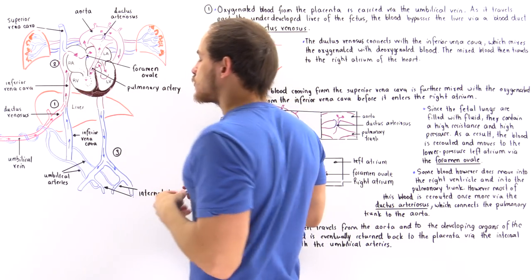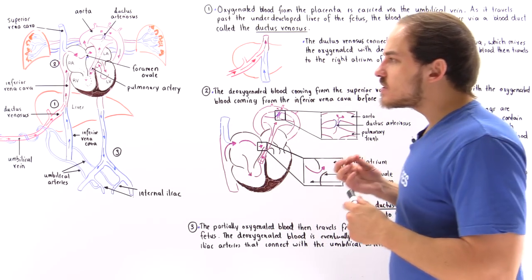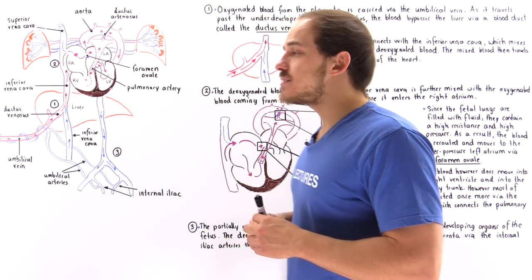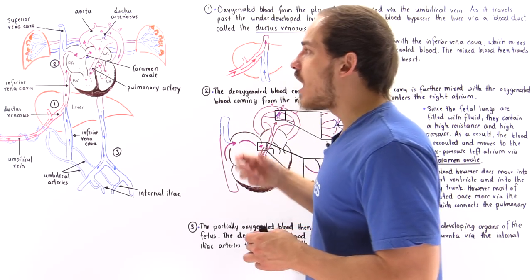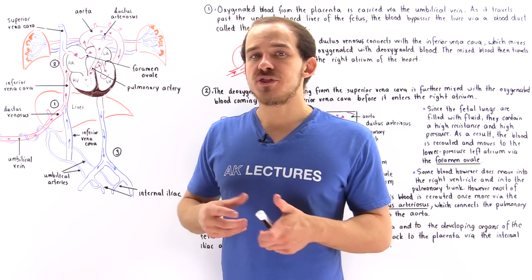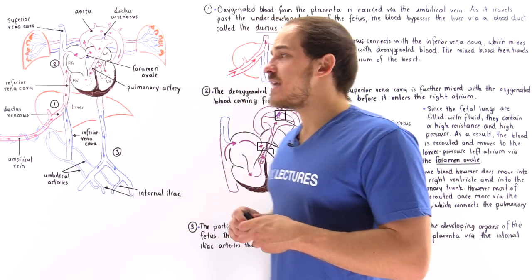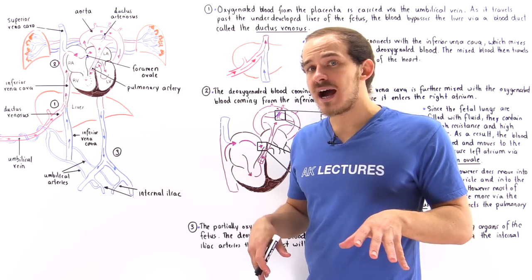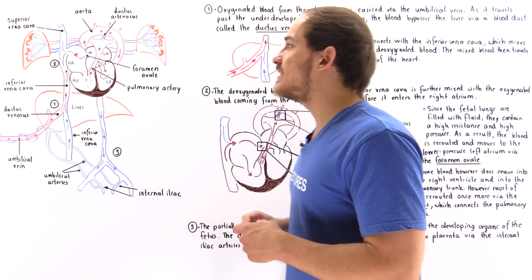Now let's focus on the lungs. Just like the liver is not yet fully functional, the lungs inside the fetus are also not functional — because the alveoli of the lungs are completely filled with fluid. This means there is no oxygen exchange taking place within the lungs. Remember, all oxygen and carbon dioxide exchange occurs inside the placenta of that developing fetus.